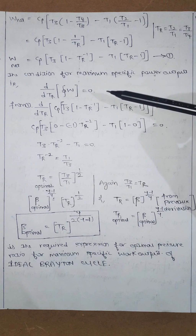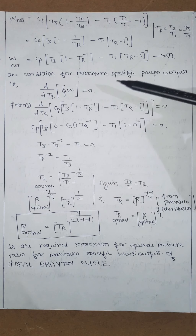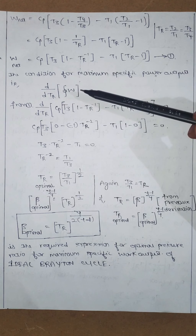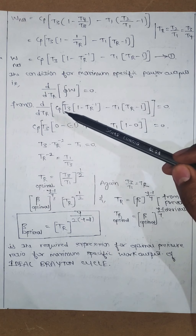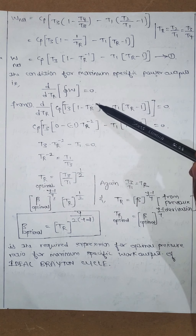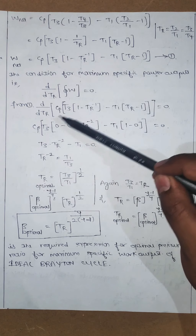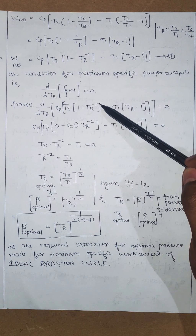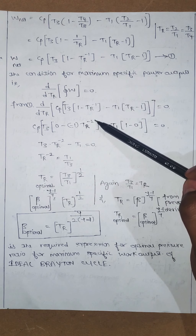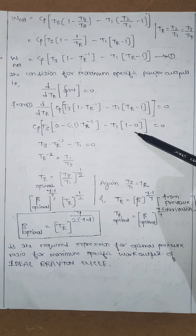The condition for maximum specific power output is that the differentiation of total work done with respect to TR must equal zero: d/d(TR) of W_net = 0. Substituting W_net from the previous equation, with Cp and T3 treated as constants, the differentiation gives: T3 times (-1) times TR^(-2) minus T1 times (1) equals zero.